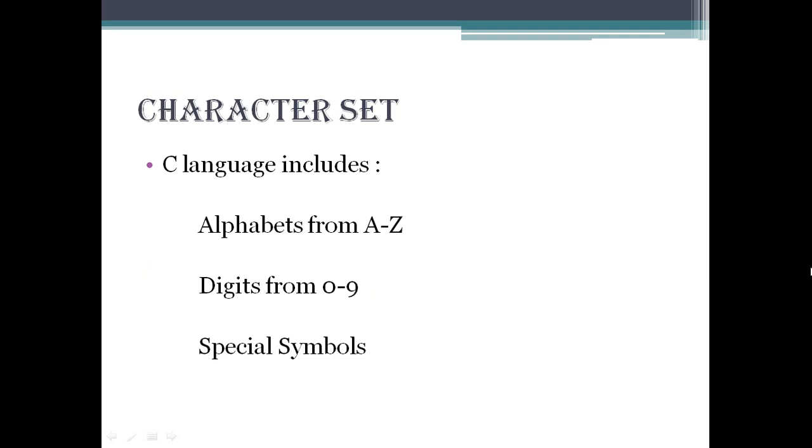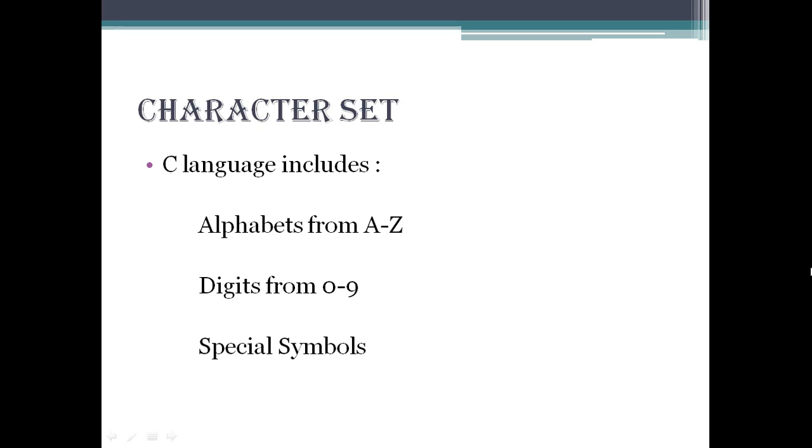C language includes the character set which includes alphabets from A to Z, digits from 0 to 9, and special symbols include all the symbols written on our keyboard. C language has constants, variables and keywords.